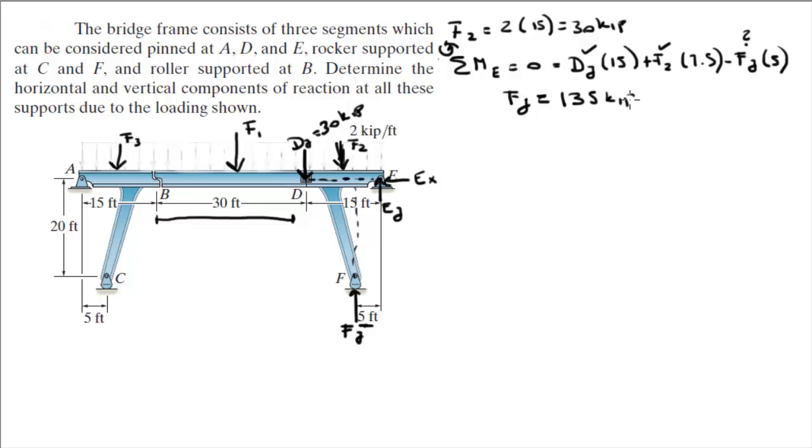So, now you can do sum of the forces on the Y is equal to 0. Which means that minus DY minus F2 plus EY plus FY is equal to 0. We got DY, we got F2, we got FY. All we're missing is EY.